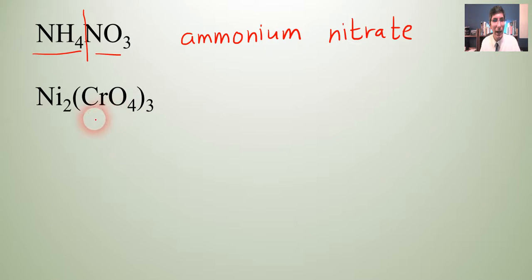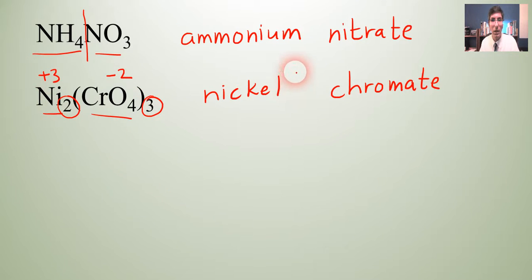Here we have another one, Ni. So that looks like nickel. And then we have CrO4, which we know is chromate. Now nickel is a transition metal. And so we need to have a Roman numeral in parentheses for that. So we can unswap the charges. We have 2 and 3 here. So the 2 goes with that. And so the 3 goes with the nickel. So it's nickel 3 chromate. Just like that.